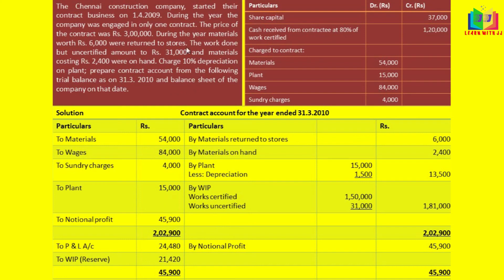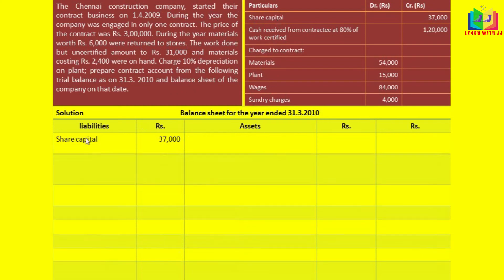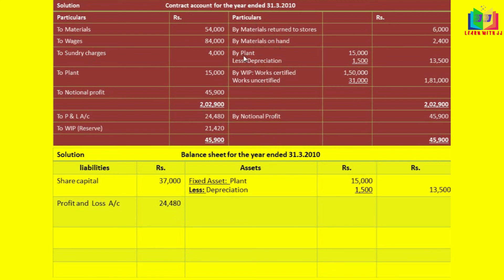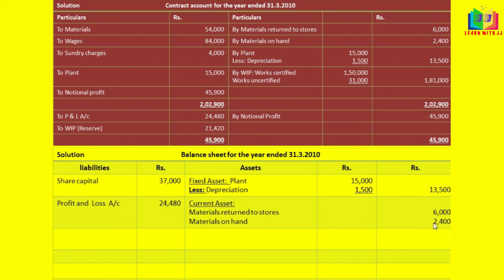Now we can do the balance sheet. We have to write the share capital on the liability side of the balance sheet — that is 37,000. Next, we will write P&L, that is 24,480, on the liability side. The fixed asset is the plant value at 13,500, written on the asset side. The current assets are material returned to stores and material on hand — together written under current assets. The next one is work in progress, which we have to write.